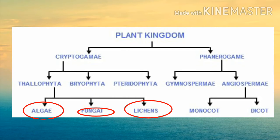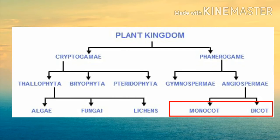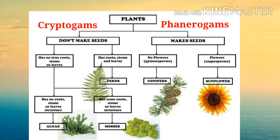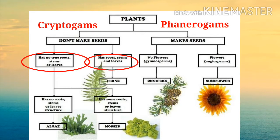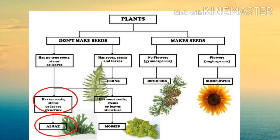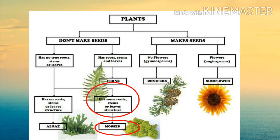Plants which do not make seeds are called cryptogams, and those which make seeds are called phanerogams. Phanerogams have seeds — if there are no flowers, we call them gymnosperms, and if there are flowers, we call them angiosperms. Some cryptogams have roots, stem, and leaves, and some do not. Those having roots are divided into ferns, those without are algae, and those with some root-like structures are mosses.